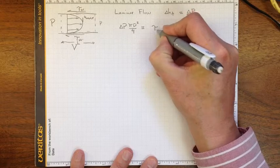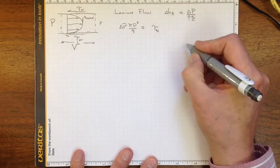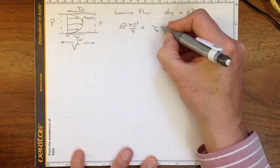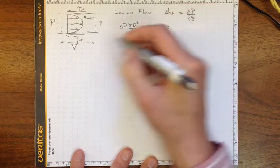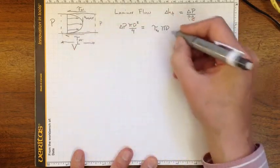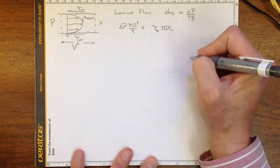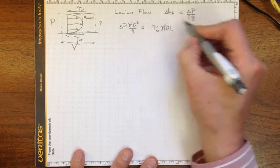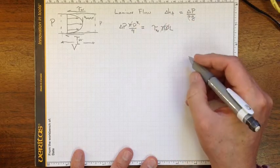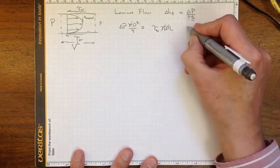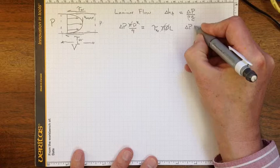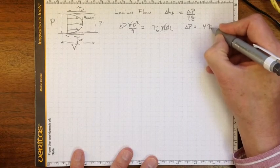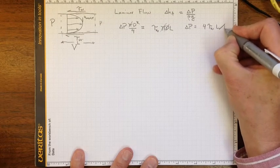So that'll be tau wall times pi times d, that's the distance around, times L, the length of the control volume, gives us the area that that wall shear stress acts over. So we can cancel out the pi and the d, and we wind up with delta P equal to 4 tau wall length divided by diameter.